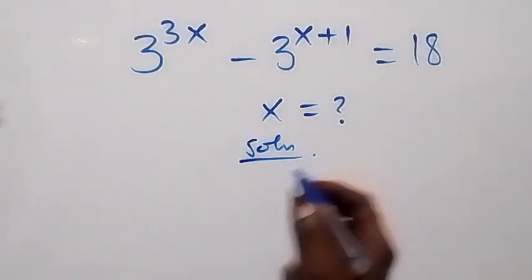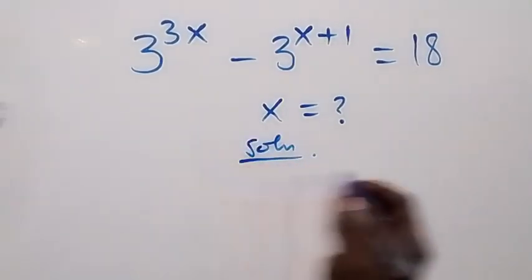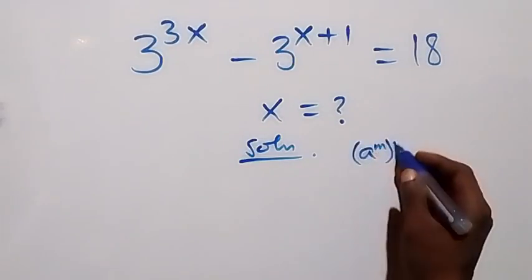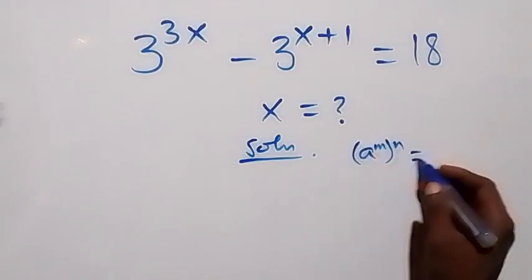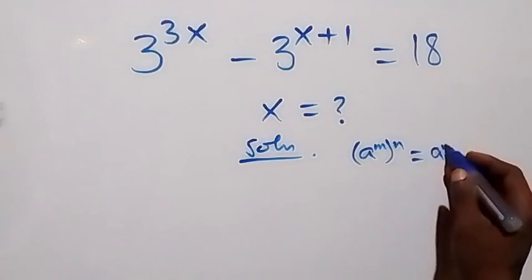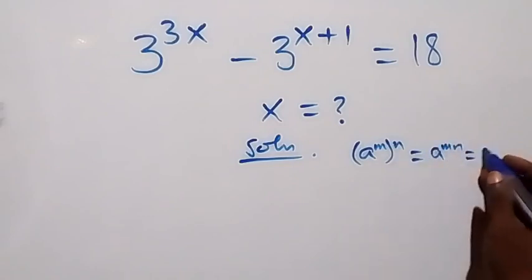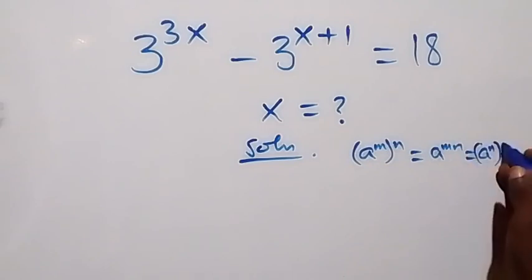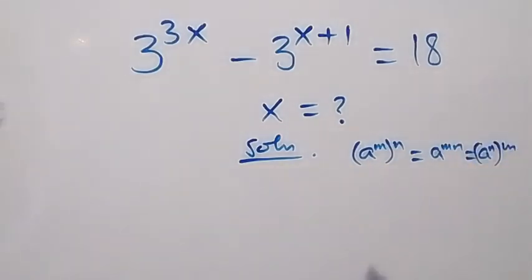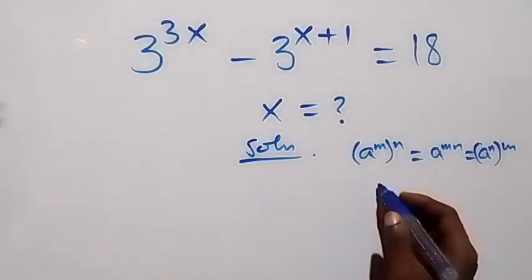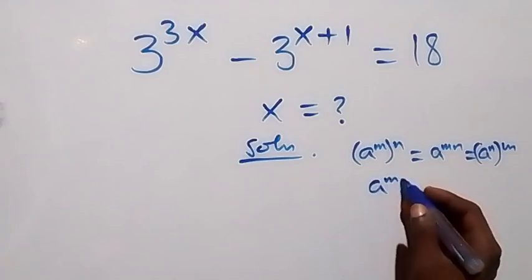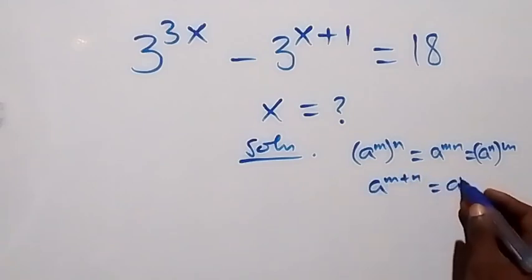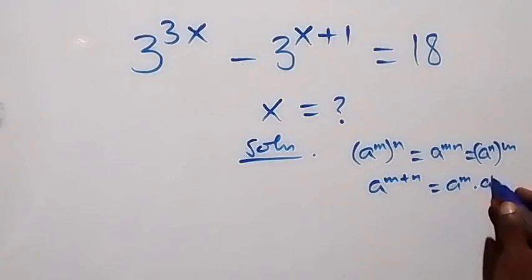From what we have here, applying the law of indices: e raised to power n, e raised to power n is the same as e raised to power mn. This is also e raised to power n, e raised to power m. And also, when we have e raised to power n plus m, this is also e raised to power m times e raised to power m.